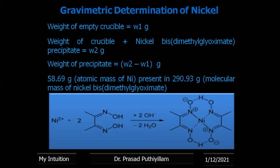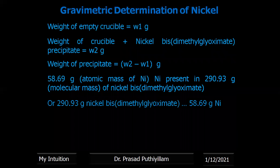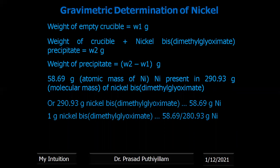That is, 58.69 gram atomic mass of nickel (58.69 U) is present in 290.93 gram of nickel bis dimethylglyoximate, where 290.93 is the molecular mass of nickel bis dimethylglyoximate. Therefore, we can rewrite it as: 290.93 gram of nickel bis dimethylglyoximate gives 58.69 gram of nickel.